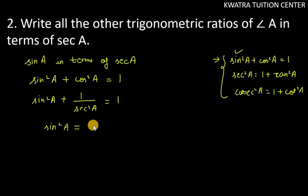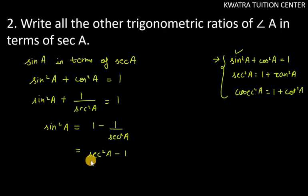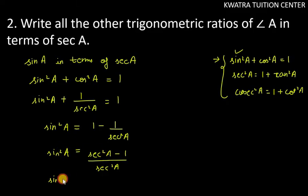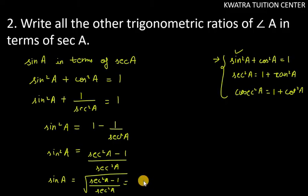We rewrite it as sin²A + 1/sec²A = 1, so sin²A = 1 − 1/sec²A. Taking LCM on the right-hand side gives (sec²A − 1)/sec²A. Taking the square root, we get sin A = √(sec²A − 1) / sec A.